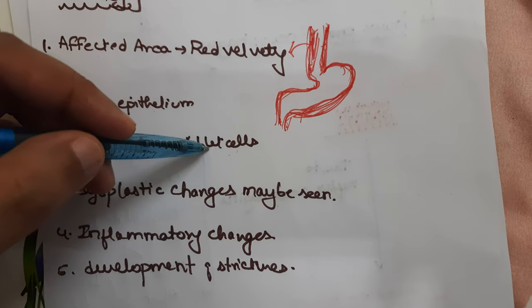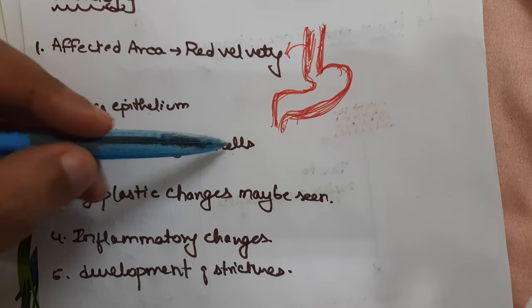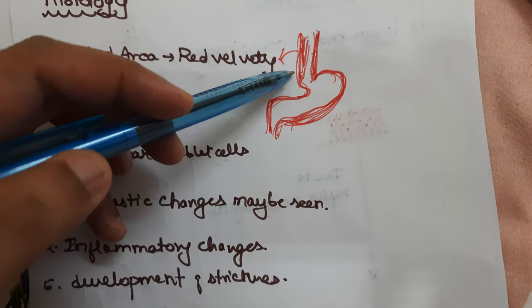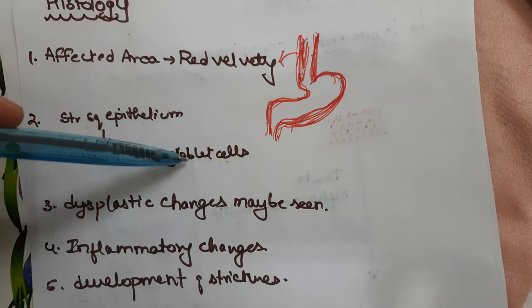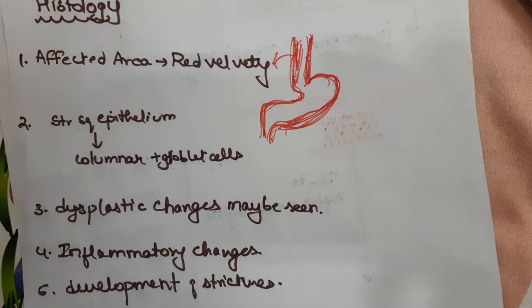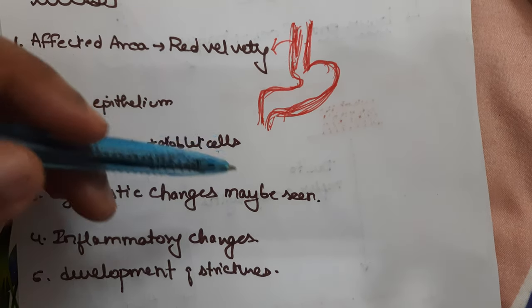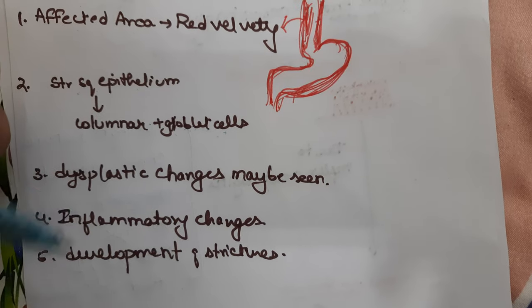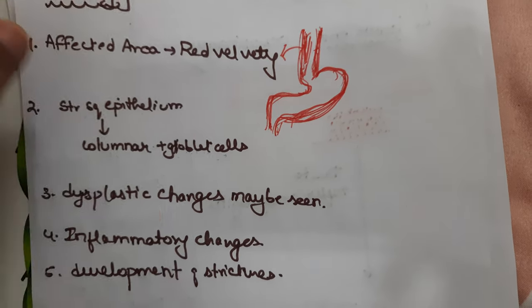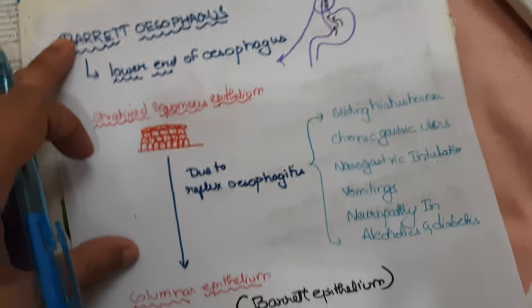The reason for this change is that goblet cells secrete mucus to protect the mucosa from damage by gastric contents — more mucus helps prevent damage. In long-term conditions, dysplastic changes and inflammatory changes may be seen, and there will be development of strictures.